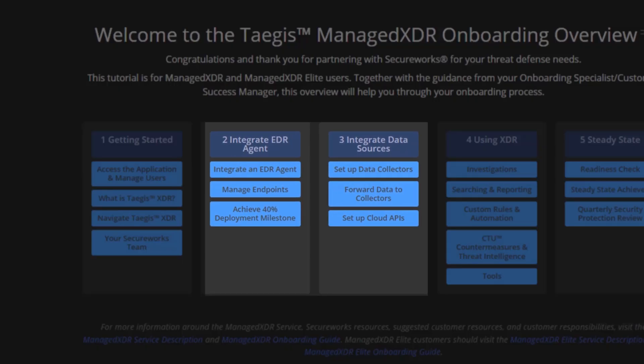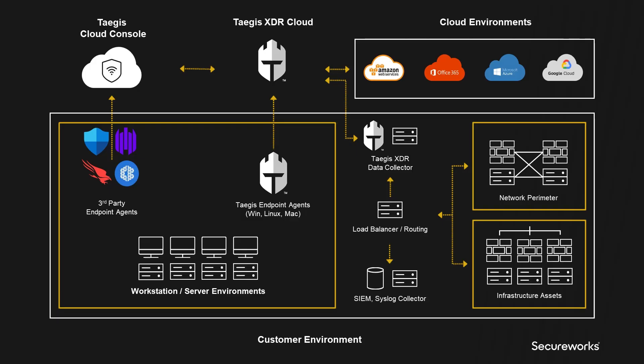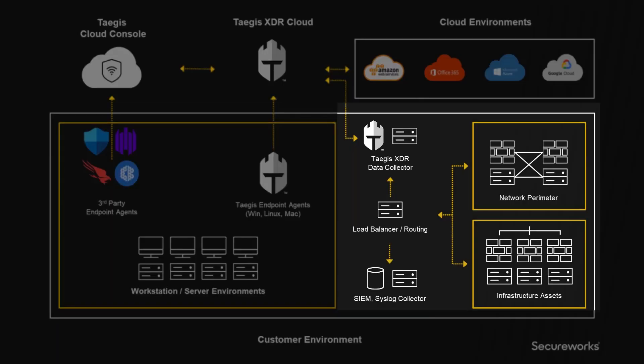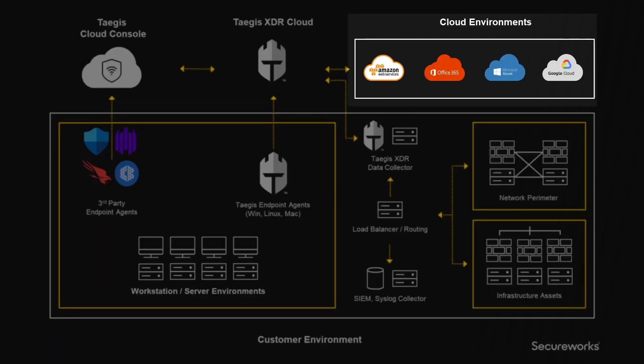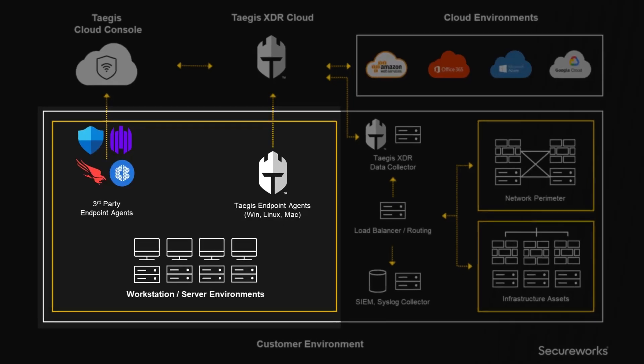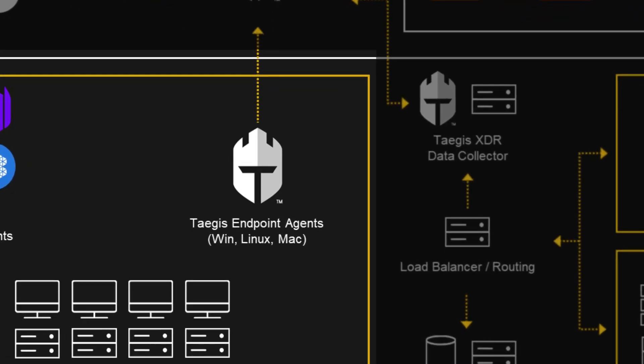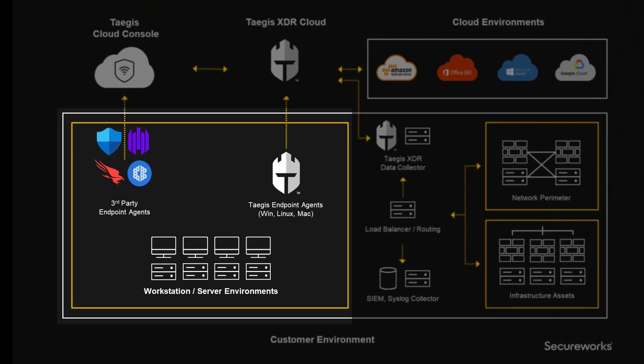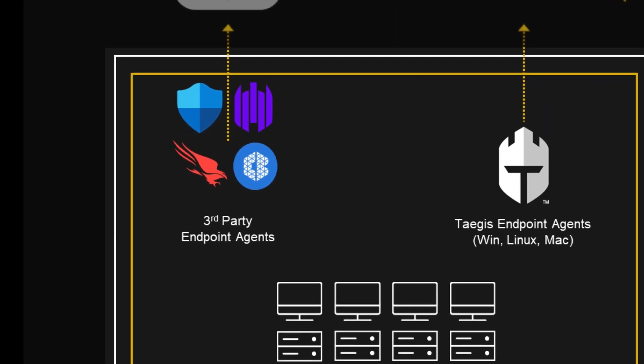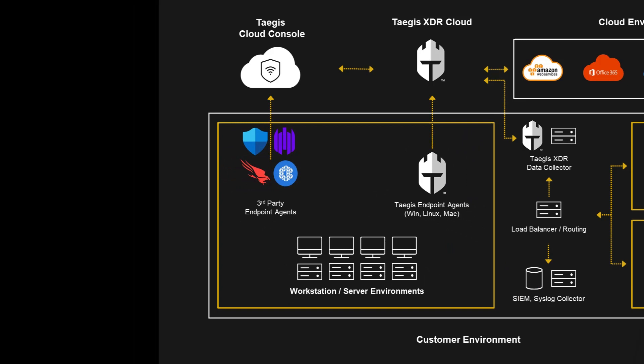The second step is to integrate your sources of telemetry. These telemetry sources can include endpoints, network devices, and cloud resources. While the best-in-class Tejas XDR endpoint agent is included with your subscription, we also support numerous third-party endpoint EDR solutions. Step-by-step integration directions and demonstration videos are provided in the onboarding site.